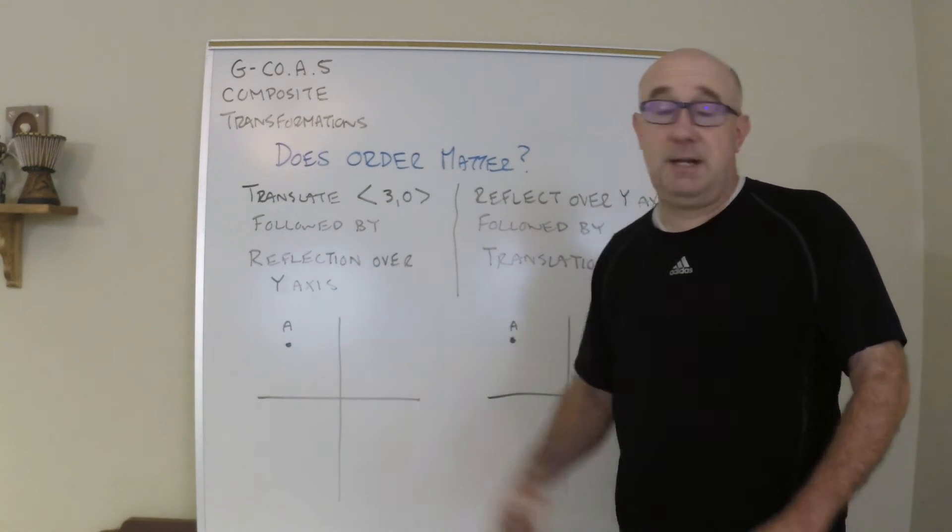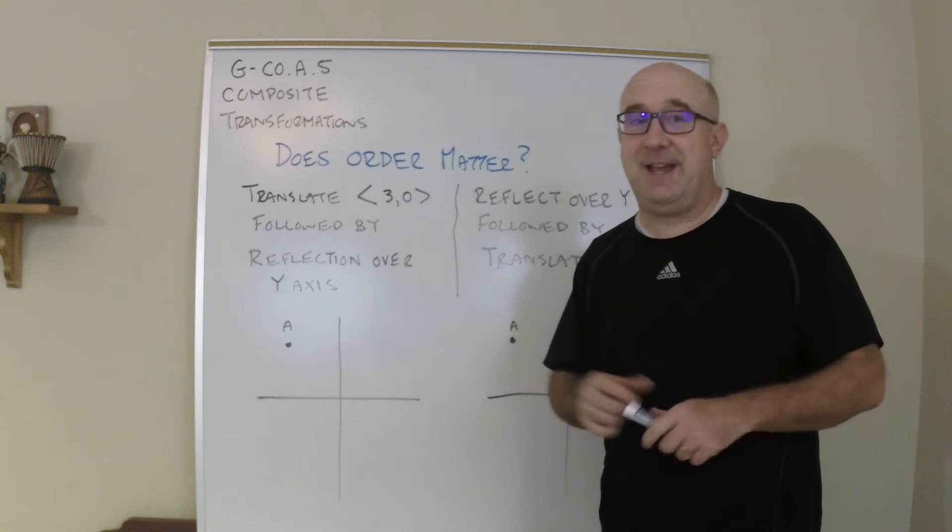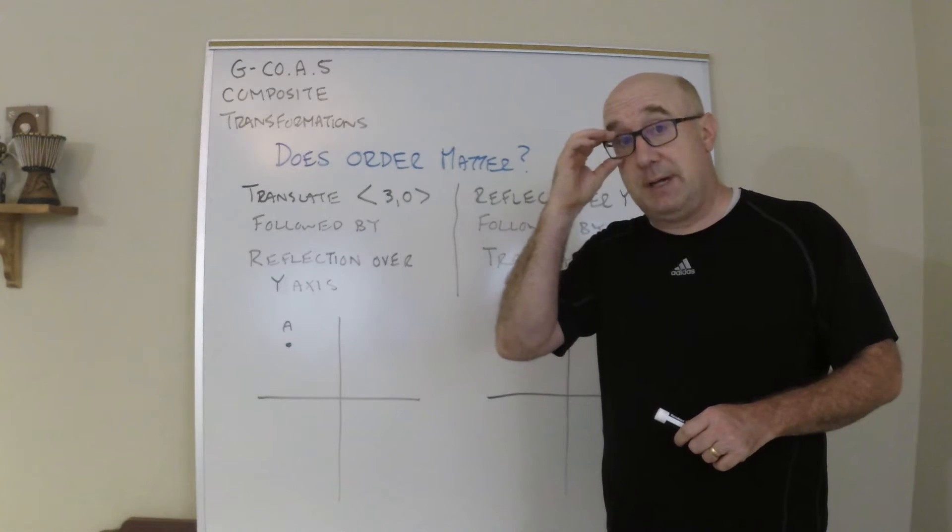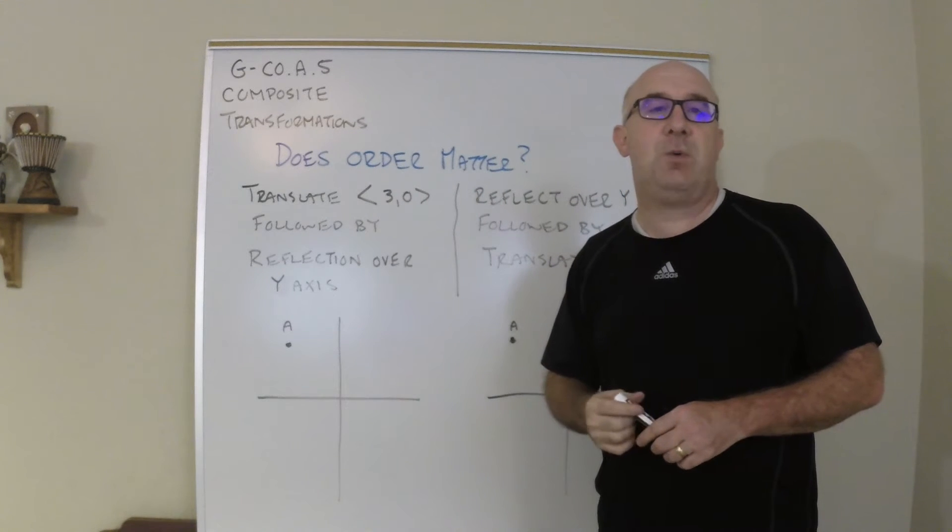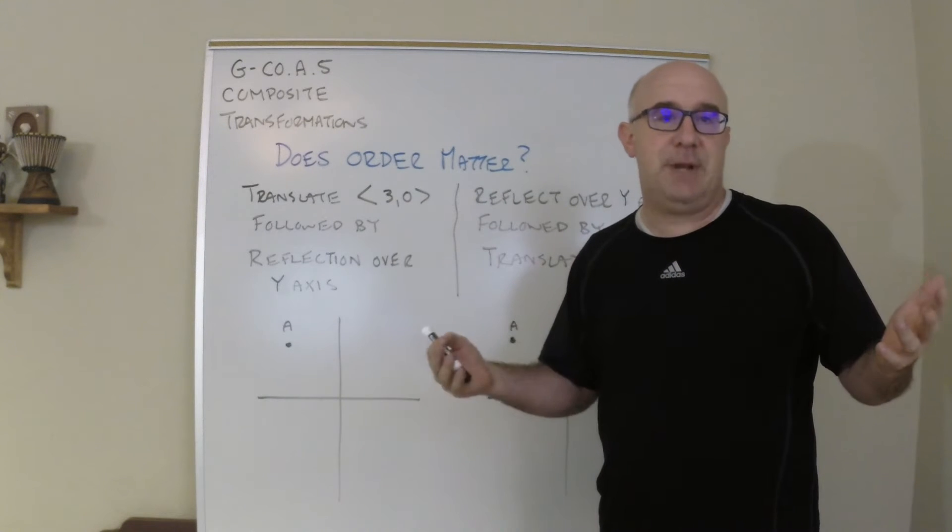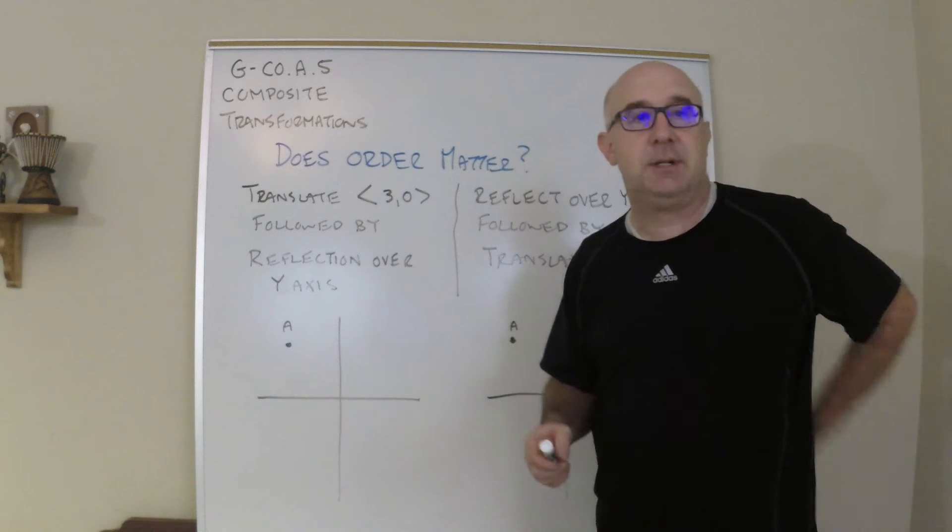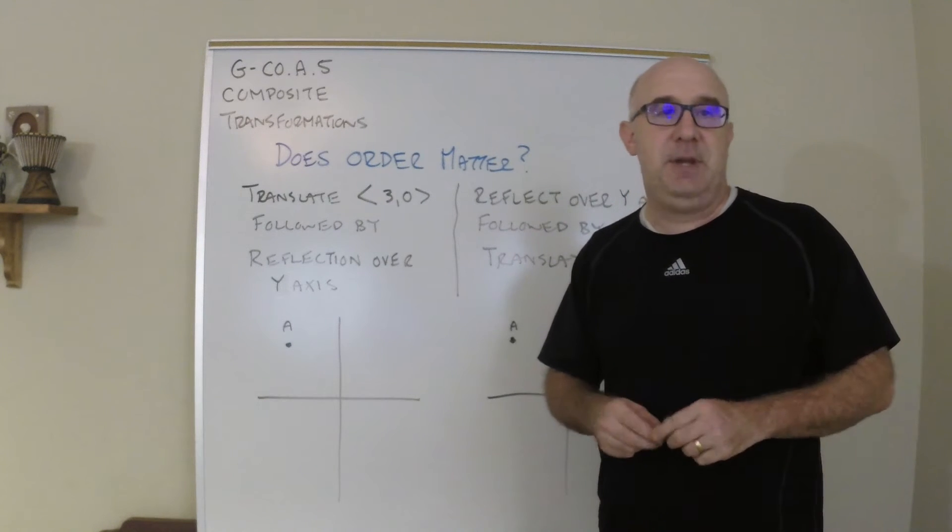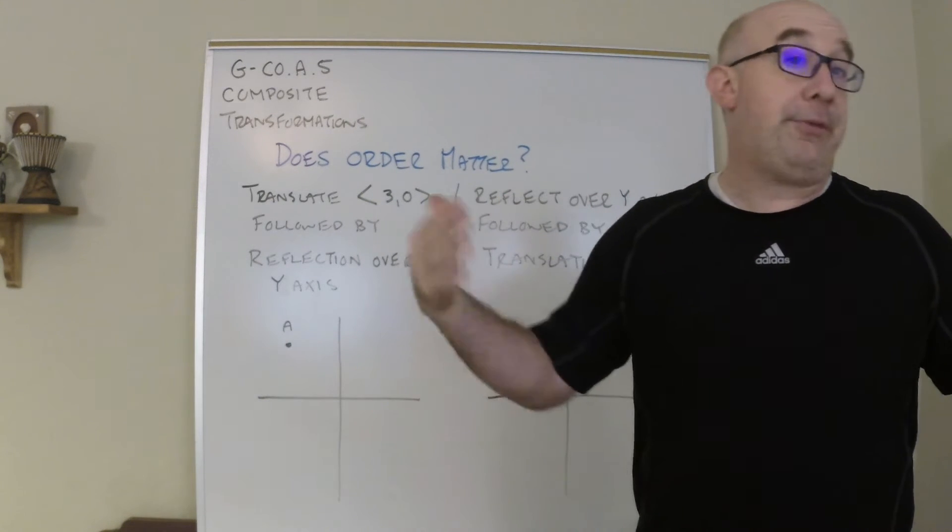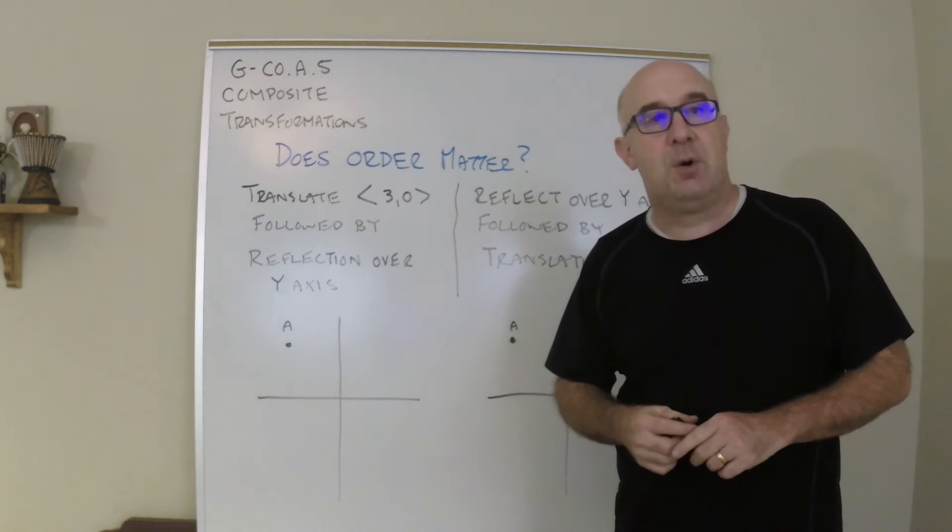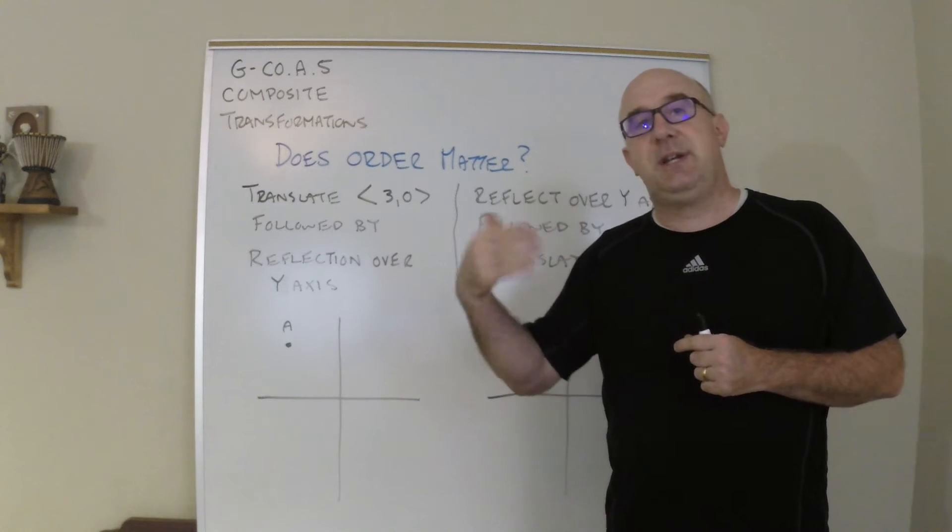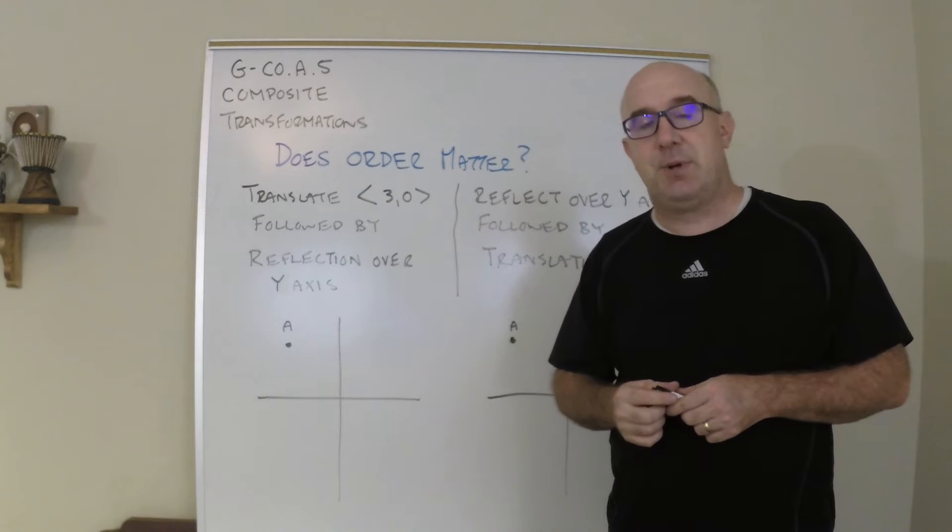All right, let's take a look at GCOA5. We're still on that topic but we're looking further down the line where we've learned about transformations and now we're going to do composite transformations, meaning two of them or three of them or four of them in a row.